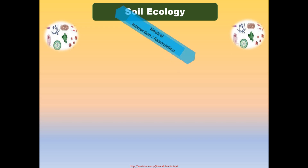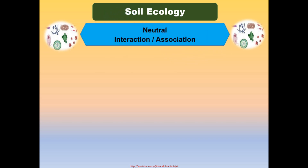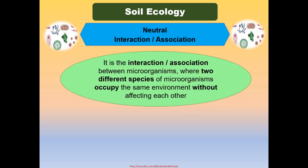Let's talk about neutral interaction or association. It is the interaction type between microorganisms where two different species occupy the same environment without affecting each other. Neutral interaction might be transitory — as environmental conditions change, such as nutrient deficiency, this relationship may shift into other types of relationships.